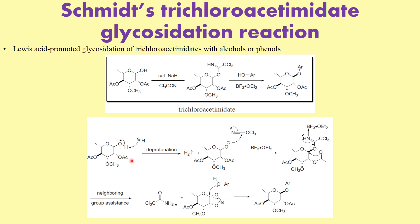In this particular case, we can clearly see the first step is the abstraction of a proton to give this intermediate, and then what happens is an O-negative attack. This is the intermediate that we form. When you have BF3 present, the nitrogen coordinates to BF3 through its lone pair of electrons.